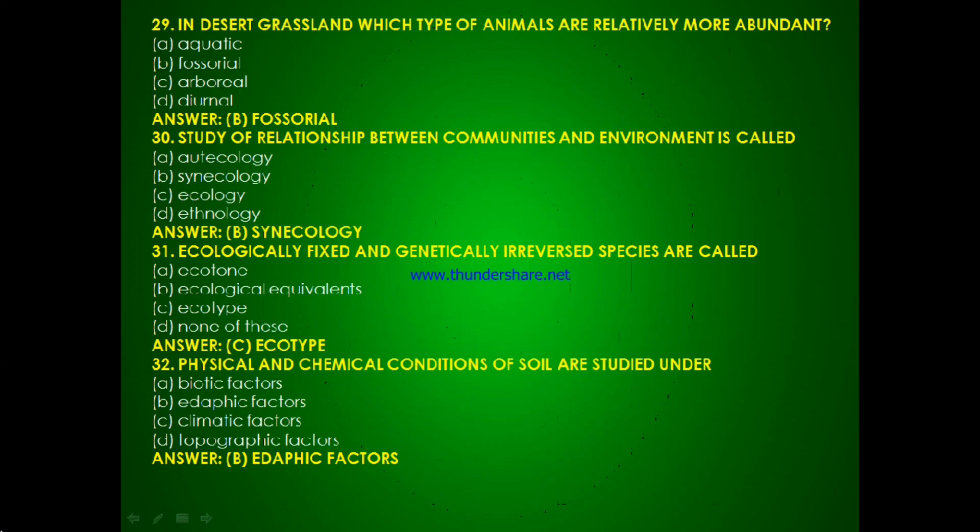Question 28: Study of relationship between communities and environment is called — autoecology, synecology, ecology or ethology? The answer is B, synecology. Question 29: Ecologically fixed and genetically irreversed species are called — ecotone, ecological equivalents, ecotype or none of these? The answer is C, ecotype.